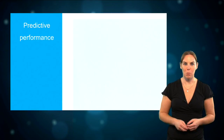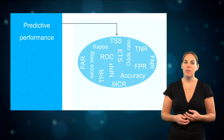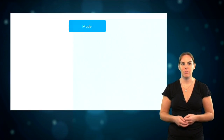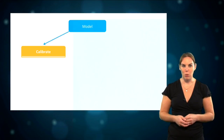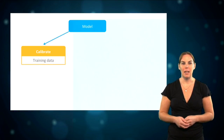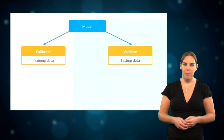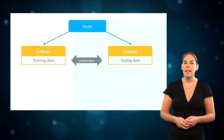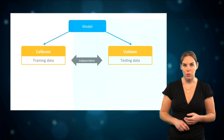The predictive performance of the model can be assessed with a suite of quantitative measures, referred to here as the evaluation statistics. To obtain these statistics, you first calibrate the model with a set of training data, and then you validate the model with a set of test data. This validation is best done with a set of test data that is independent of the training data, meaning data that is not used to fit the model.